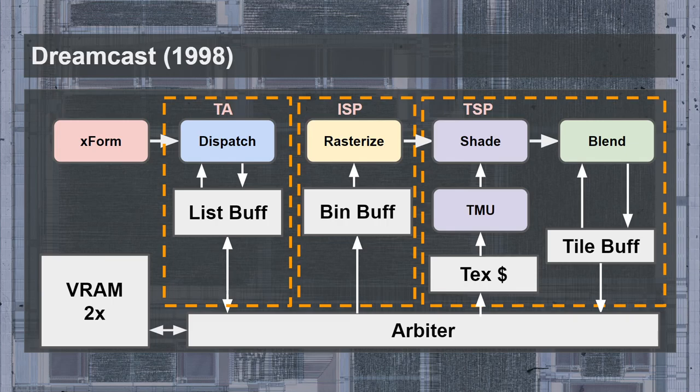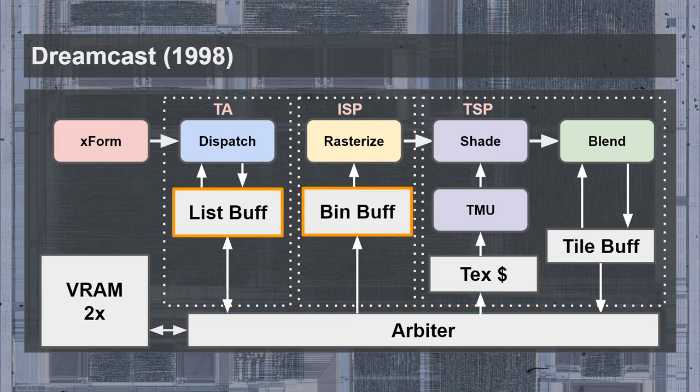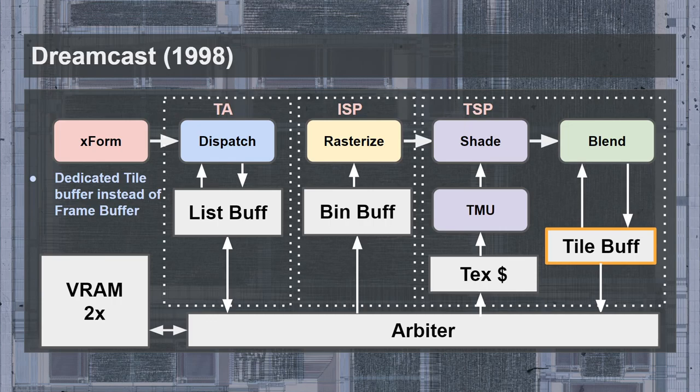The display list would be read by the Image Synthesis Processor for each tile, which performs hidden surface removal and transparency sorting. The visible pixels would then be forwarded to the Texturing and Shading Processor, which does the actual pixel color resolution and blending. For rendering, a dedicated Tile Buffer was placed within the TSP, implemented as two 4 KB buffers, each holding a tile of 32x32 pixels in 32-bit color format. The only external bandwidth consumed here was when dumping the Tile Buffer to VRAM for display output or render-to-texture.